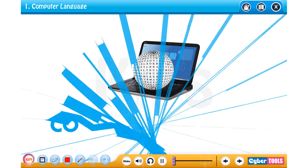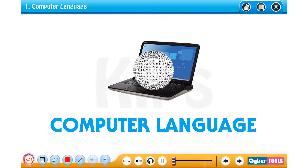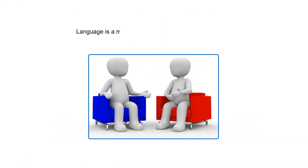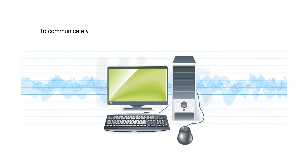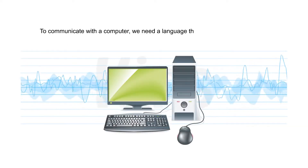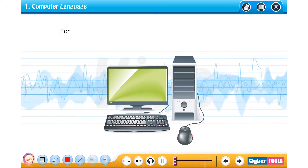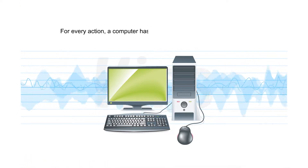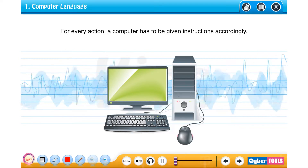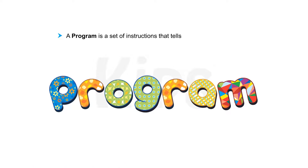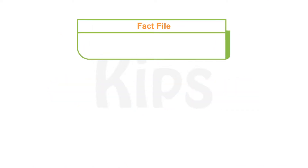Hello students, today we will learn about computer language. Language is a medium to express our views and feelings. To communicate with a computer we need a language that a computer understands. For every action a computer has to be given instructions accordingly. A program is a set of instructions that tells the computer what to do.